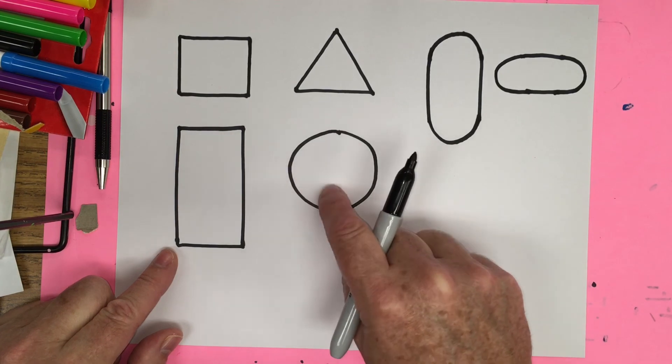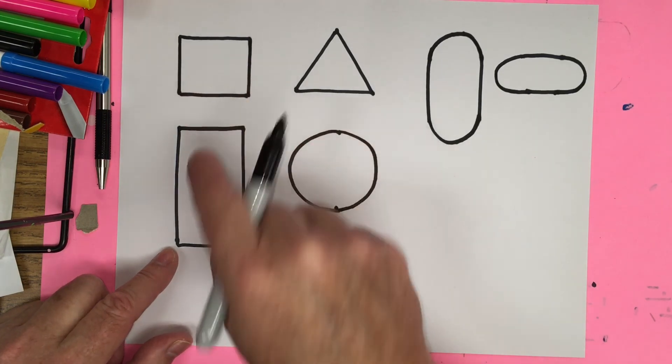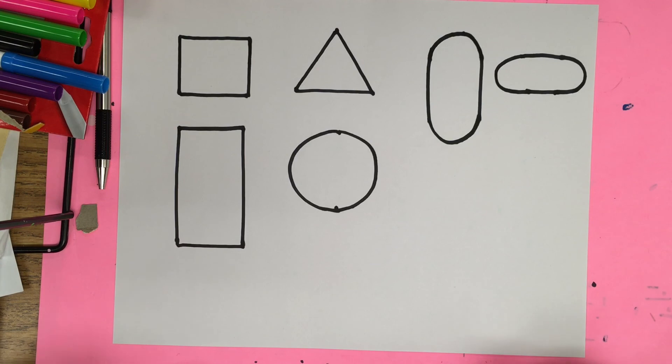We've got triangles, circles, squares, and rectangles. Now there's another kind of a shape. It's called a freeform shape.